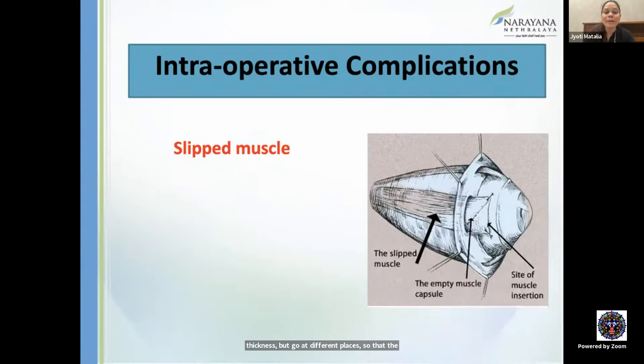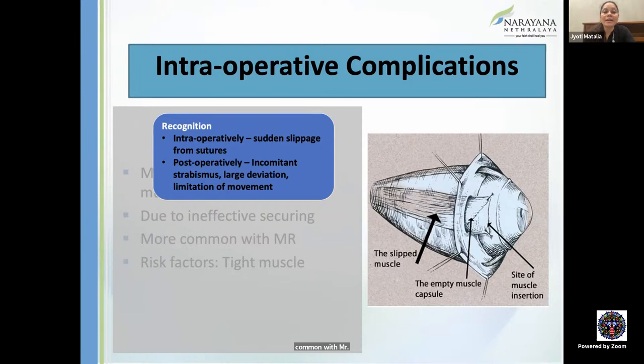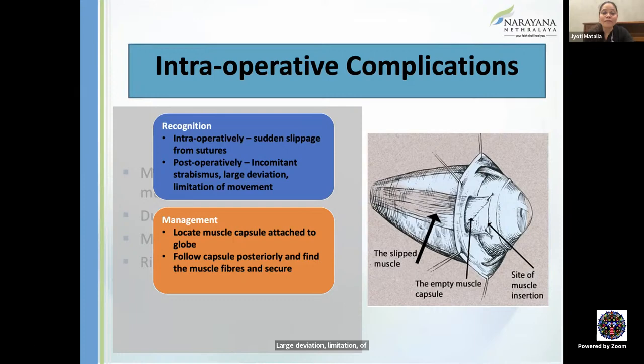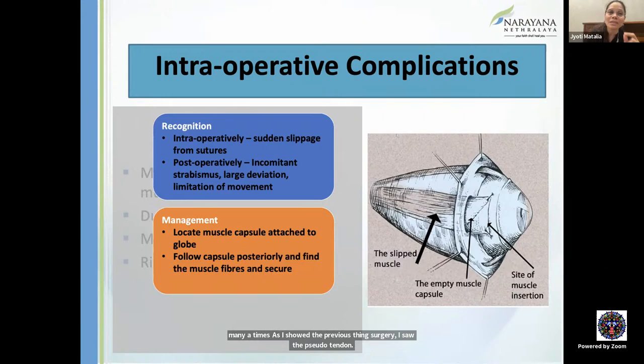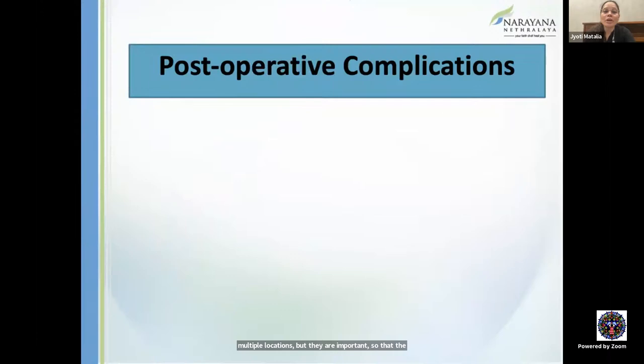Slipped muscle: the muscle belly retracts within the muscle capsule due to ineffective securing — more common with MR. Recognition: intraoperative sudden slippage; postoperatively, incomitant strabismus, large deviation, limitation of movement. The muscle capsule remains attached to the globe — follow it posteriorly to find the pinkish pseudo-tendon appearance and reddish muscle fibers. Prevention: use full-thickness bites at multiple locations, and use grooved hooks or muscle clamps.